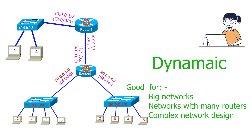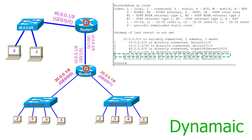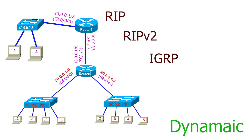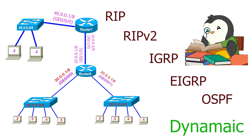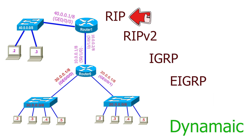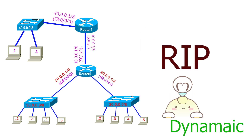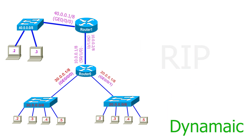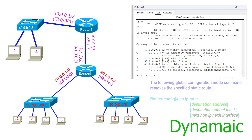In dynamic routing, we configure a routing protocol that discovers, adds, and manages routes in the routing table. If any change occurs in the network, it automatically updates the related information. There are many routing protocols; we will learn about these in upcoming videos. In this video, we will use the RIP routing protocol, which is the most straightforward routing protocol.